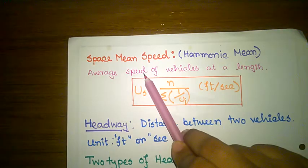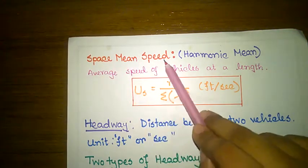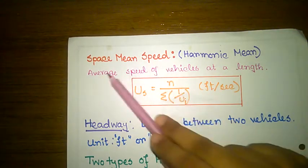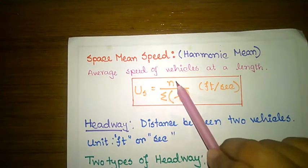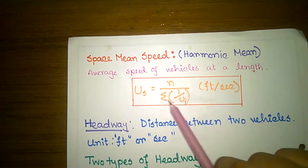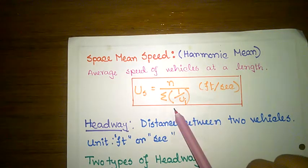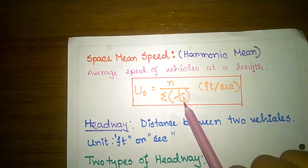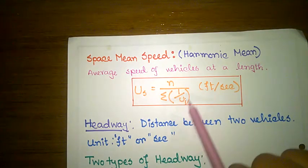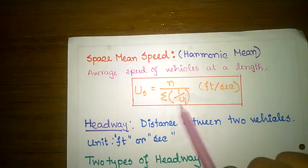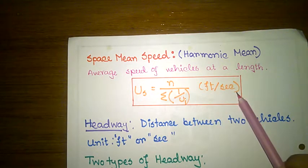Space-mean speed represents the average speed of vehicles across a road segment. The formula is: us equals n divided by the summation of 1 by ui. Here, ui is the speed of the i-th vehicle, n is the number of vehicles, and the unit is distance per second.